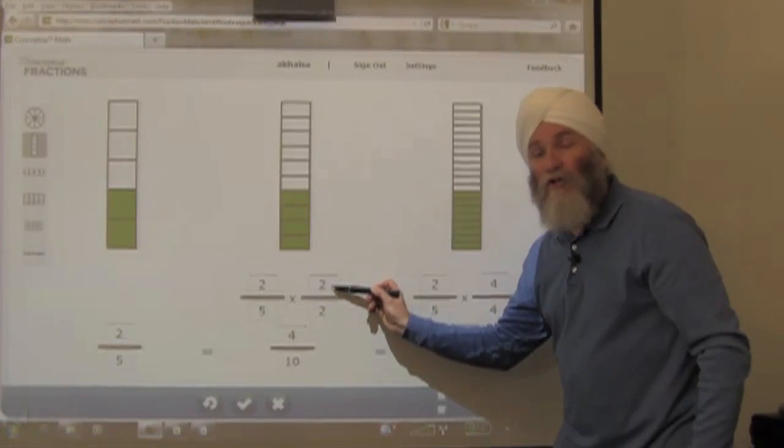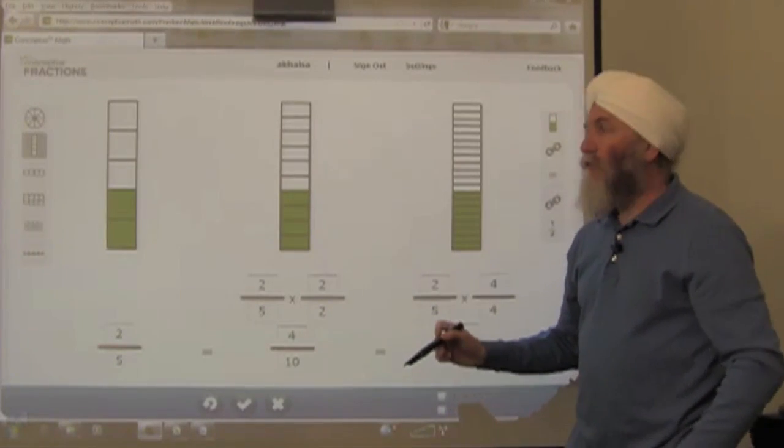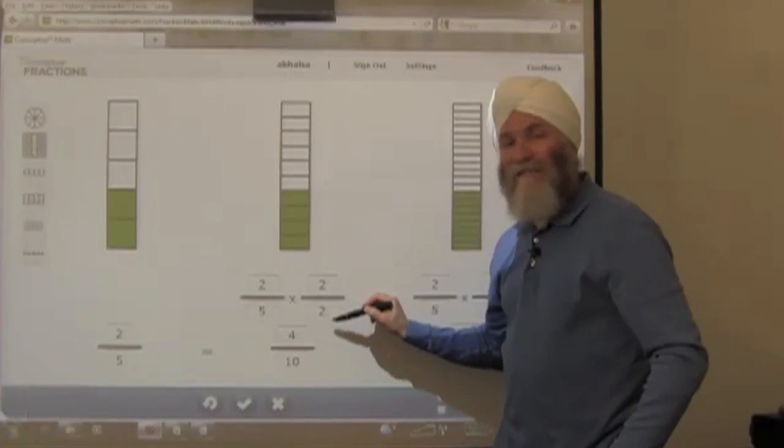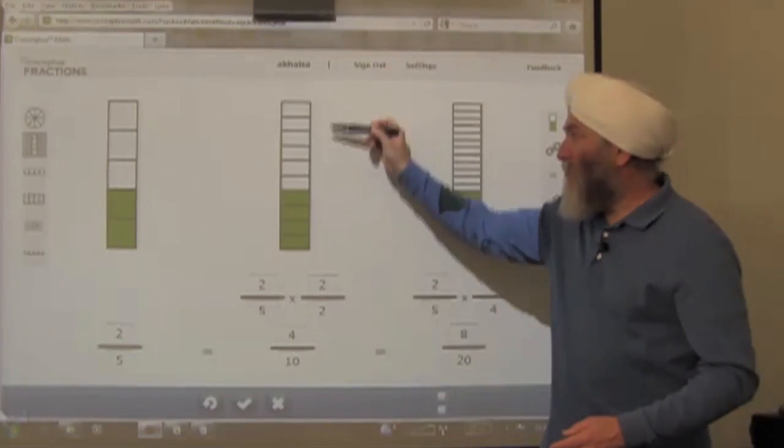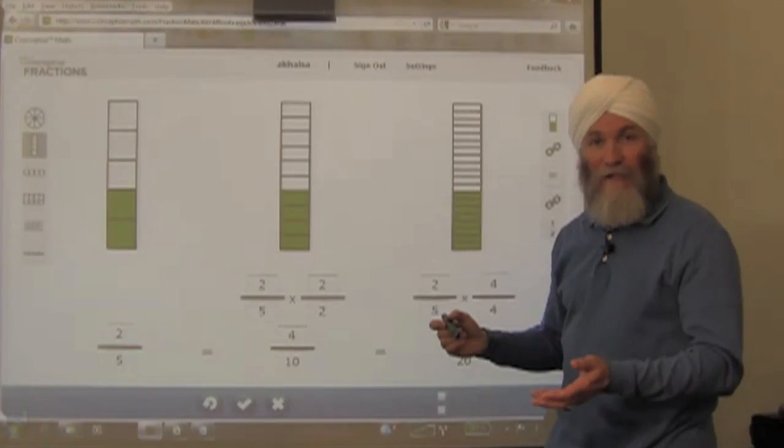If you call the one two over two or two halves, you'll end up with twice the denominator, twice the numerator, twice the number of equal parts, twice the number of shaded parts.